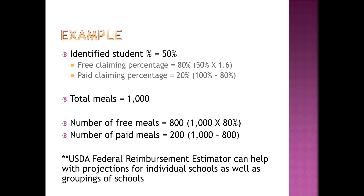To look at an example: if the identified student percentage was 50%, the free claiming percentage would be 80% — that's 50% times 1.6. The paid claiming percentage would be 20%. So if every day you served 1,000 meals, 800 would be free meals and 200 would be paid meals. USDA has developed a reimbursement estimator tool to help with projections, and it will also be coming out as a numbered memo.